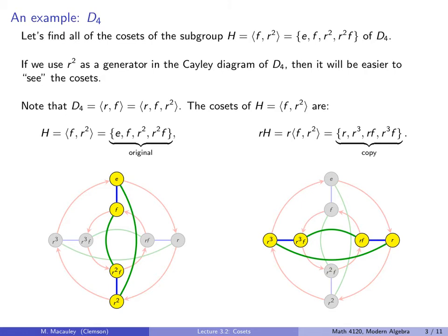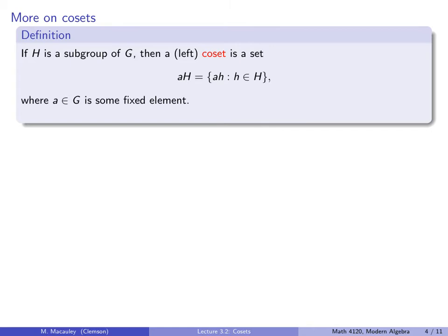D4 is generated by these two elements as we know, but we're going to add R² as well, giving it a new type of arrow — a green arrow. R² is of order two, so a double arrow, and R² gets you back to the identity. The cosets of this subgroup are: here's the original subgroup, this size-four set, and then the identical copy is this size-four set right here.